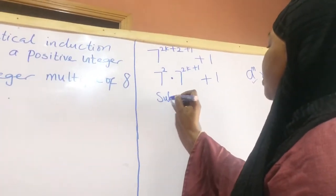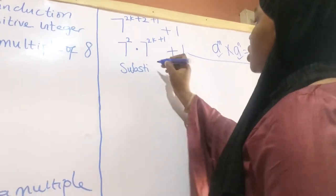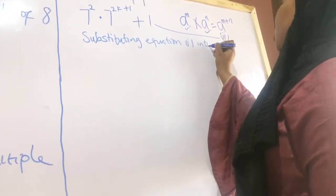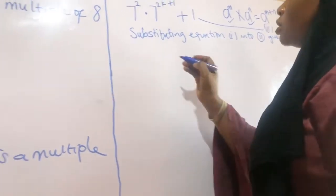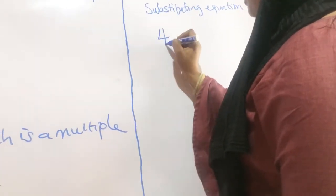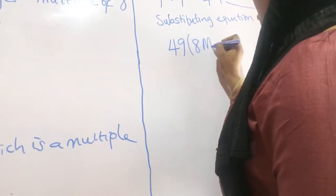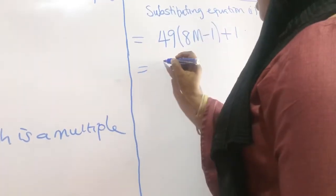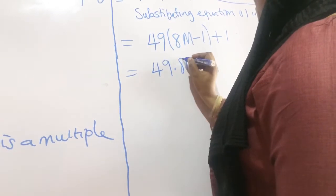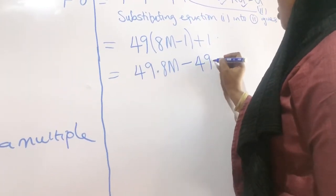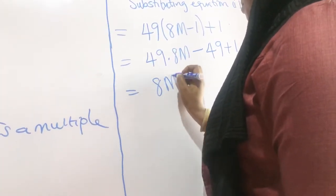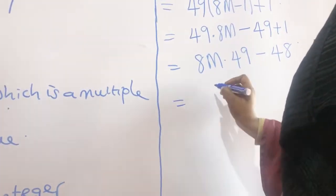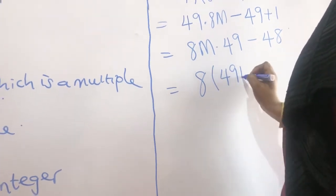Substituting equation 1 into equation 2 gives: 7 squared, which is 49, multiplied by (8m minus 1), plus 1. Expanding, we get 49 times 8m minus 49 plus 1, which equals 8m times 49, minus 48.